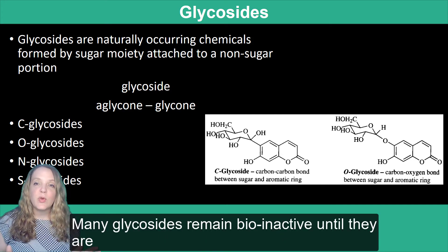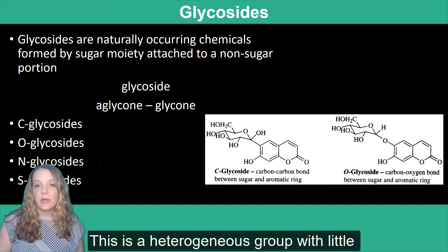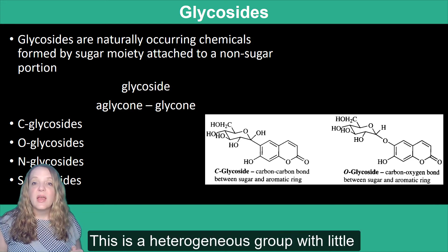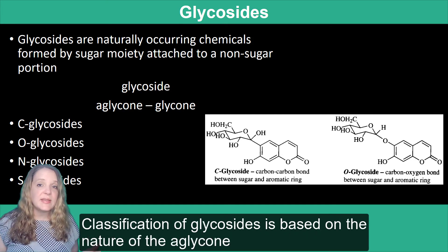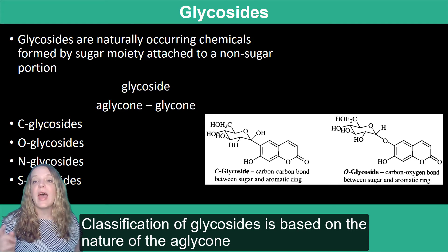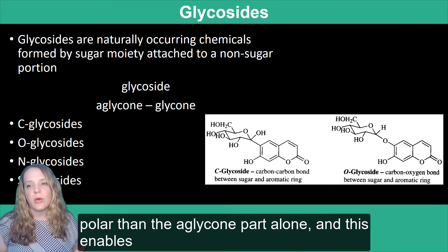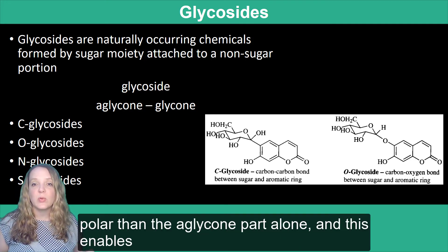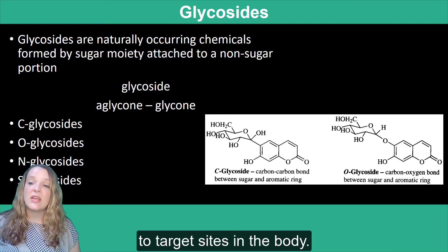Many glycosides remain bioinactive until they are hydrolyzed and the aglycone is released as a prodrug. This is a heterogeneous group with little in common besides their physicochemical properties. Classification of glycosides is based on the nature of the aglycone unit, and glycosides are usually more polar than their aglycone parts alone, enabling them to be more water-soluble and impacting their transport to target sites in the body.